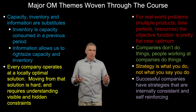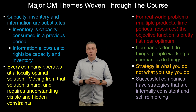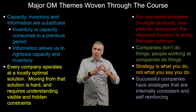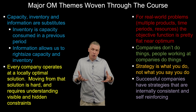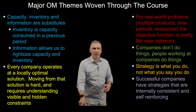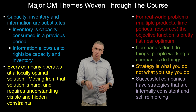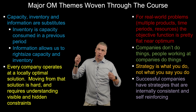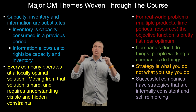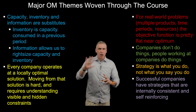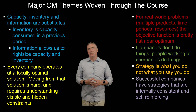The first major theme woven through the course is that capacity, inventory, and information are substitutes. Whenever you see inventory somewhere — in a store or factory — you know that was capacity consumed in a previous period to make that inventory. There is a very direct relationship between inventory and capacity. What information allows you to do is actually dial in the appropriate amount of capacity and inventory required.